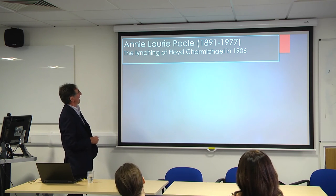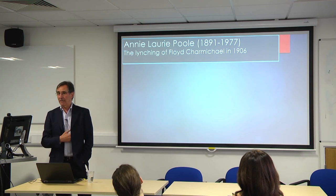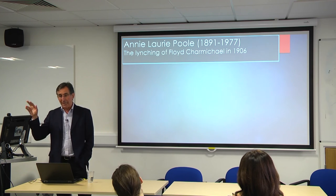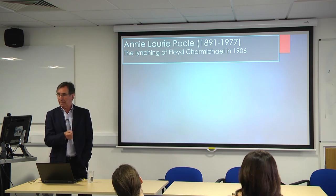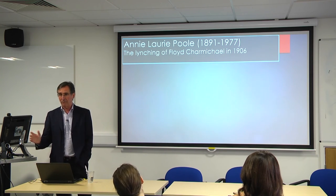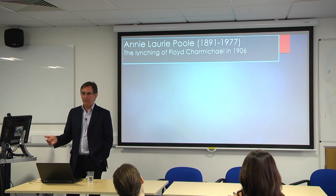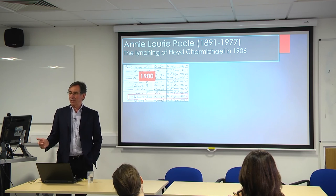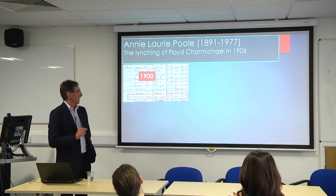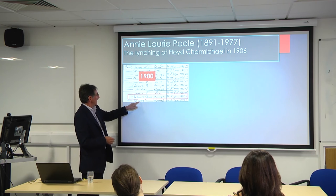One of the women I first investigated was Annie Laurie Poole, allegedly raped by Floyd Carmarkle in 1906 in Atlanta. That event, along with other alleged rapes, led to the 1906 Atlanta race riots, where 23 Black people lost their lives at the hands of whites in a rampage. I found Annie Laurie Poole in the 1910 census records. She was born in 1891, so in 1906 she was 15. Her sister Tommy was initially recorded as a son and then corrected to daughter.